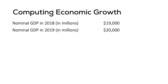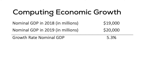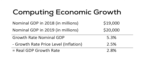Using the equation for growth rates, the growth rate in nominal GDP between the two years is 5.3 percent. However, we know that some of that growth was due to inflation. If inflation between the years was 2.5 percent, we need to subtract that out, meaning the growth rate of real GDP was 2.8 percent.